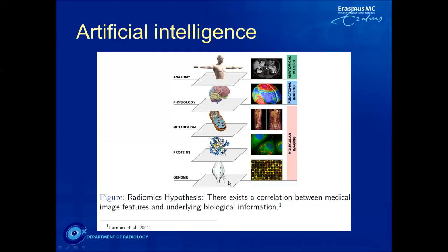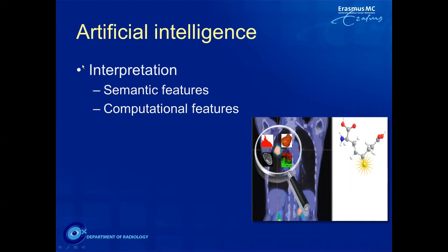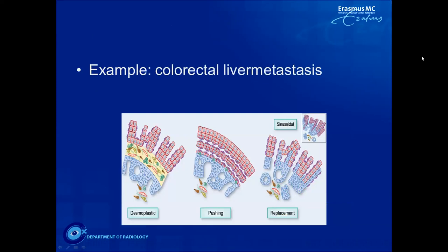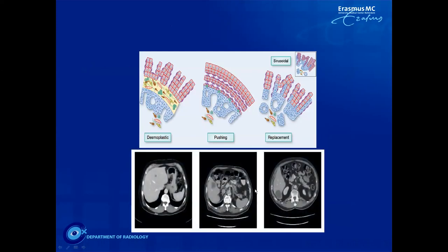Radiomics is another important application of AI. We need to be aware that there are semantic features visible in an image but also computational features that the human eye cannot detect. The computer can extract specific information not perceptible to us and provide it to the referring physician. For example, colorectal liver metastases have three different growth patterns. Using radiomics techniques, an AUC of approximately 0.80 can be achieved in predicting the specific growth pattern based on CT alone — which definitely helps guide treatment decisions.